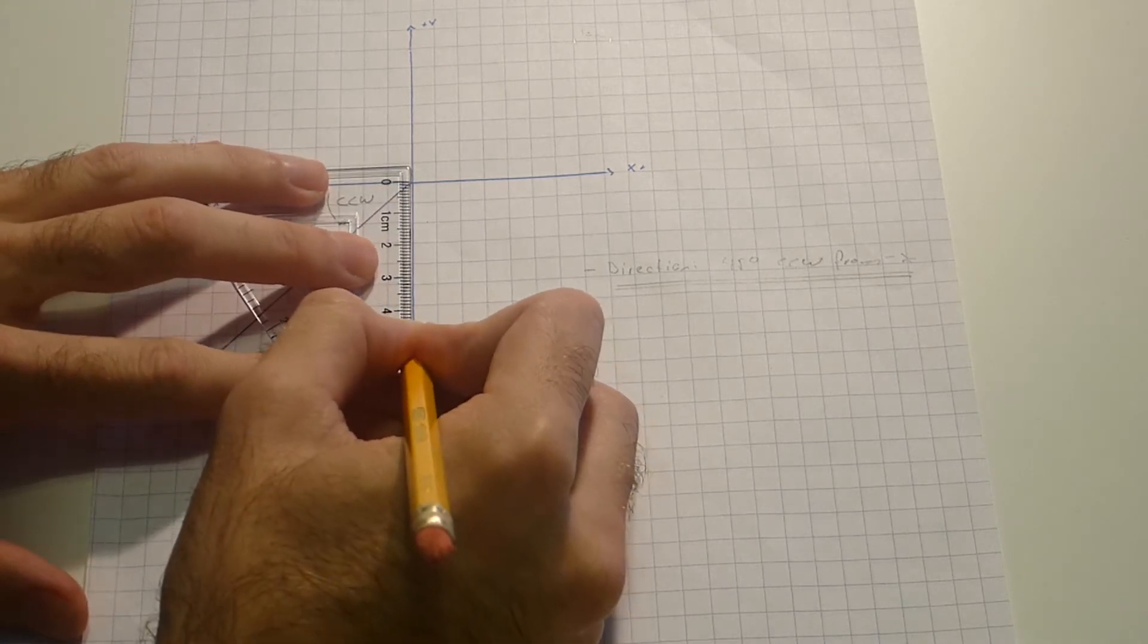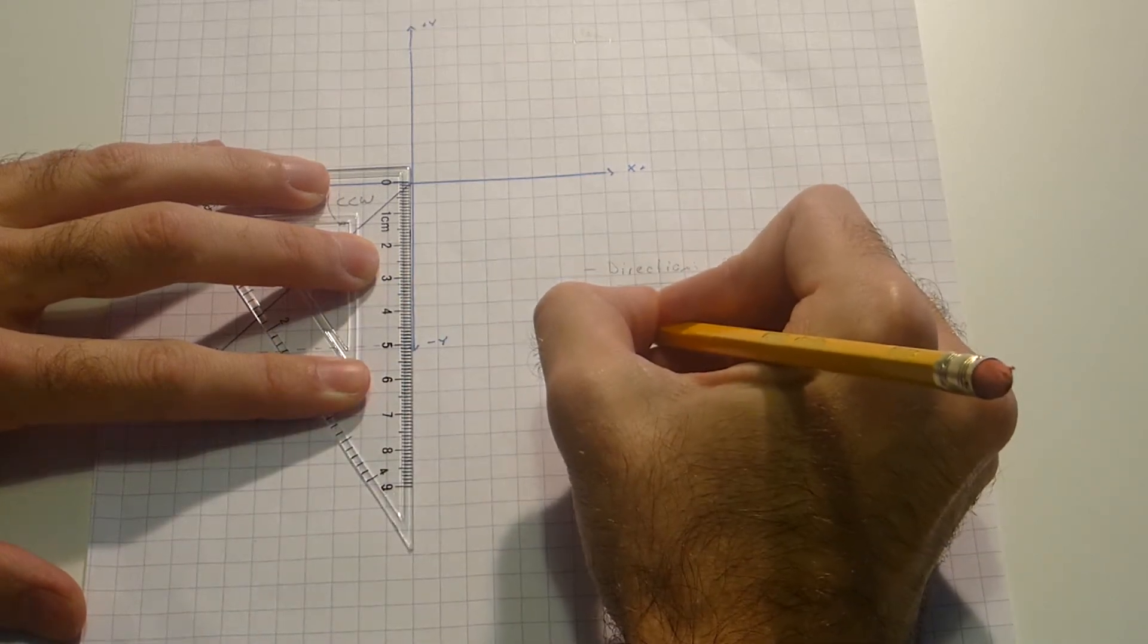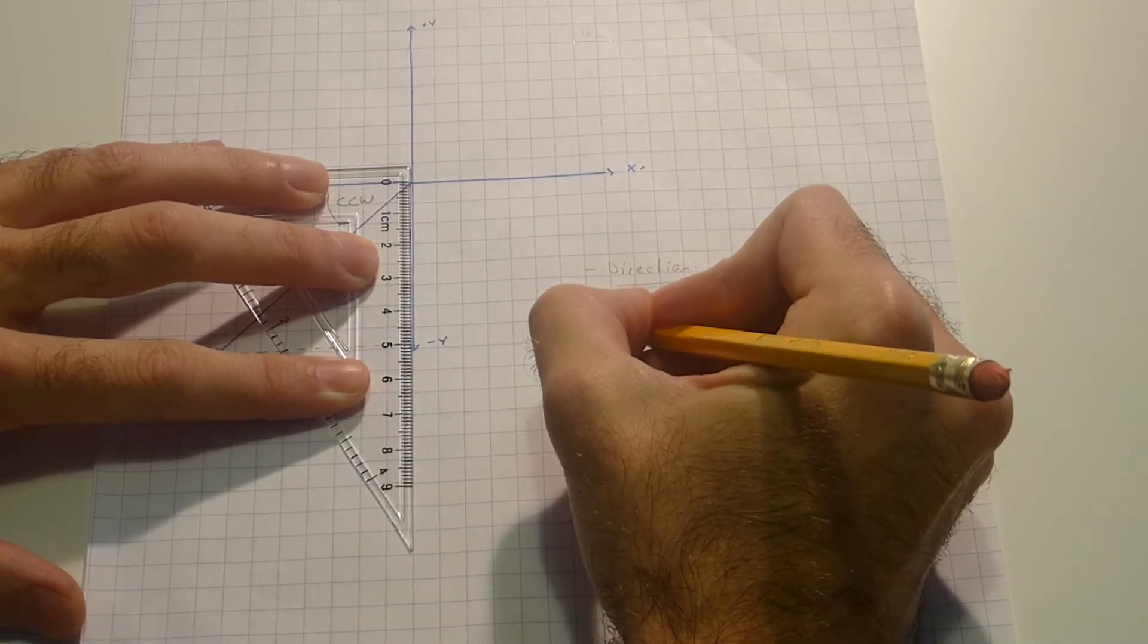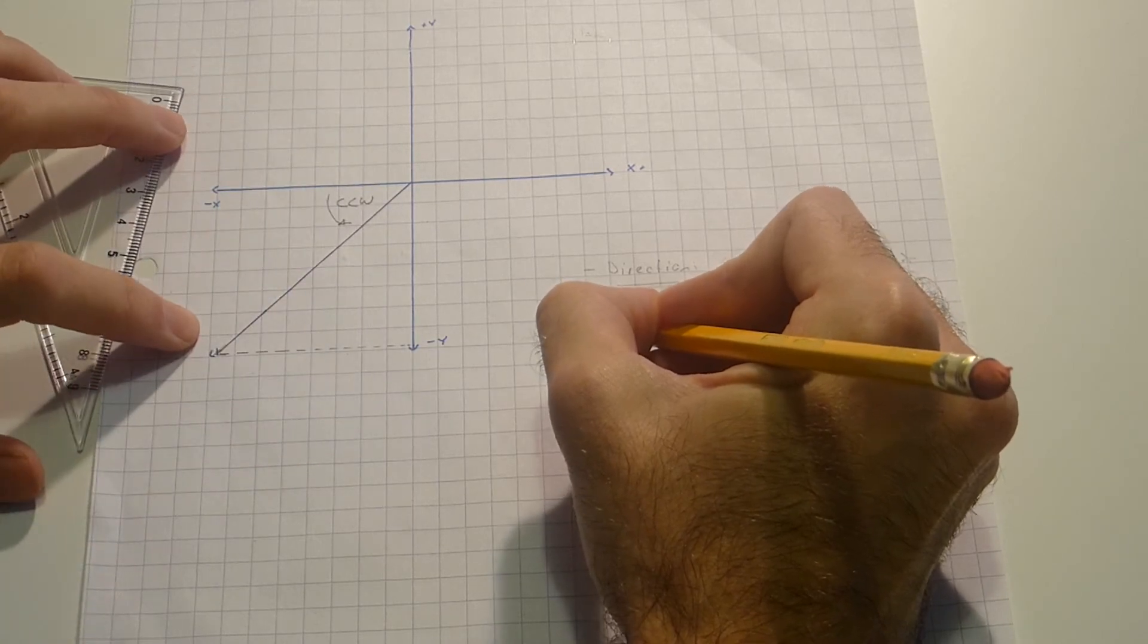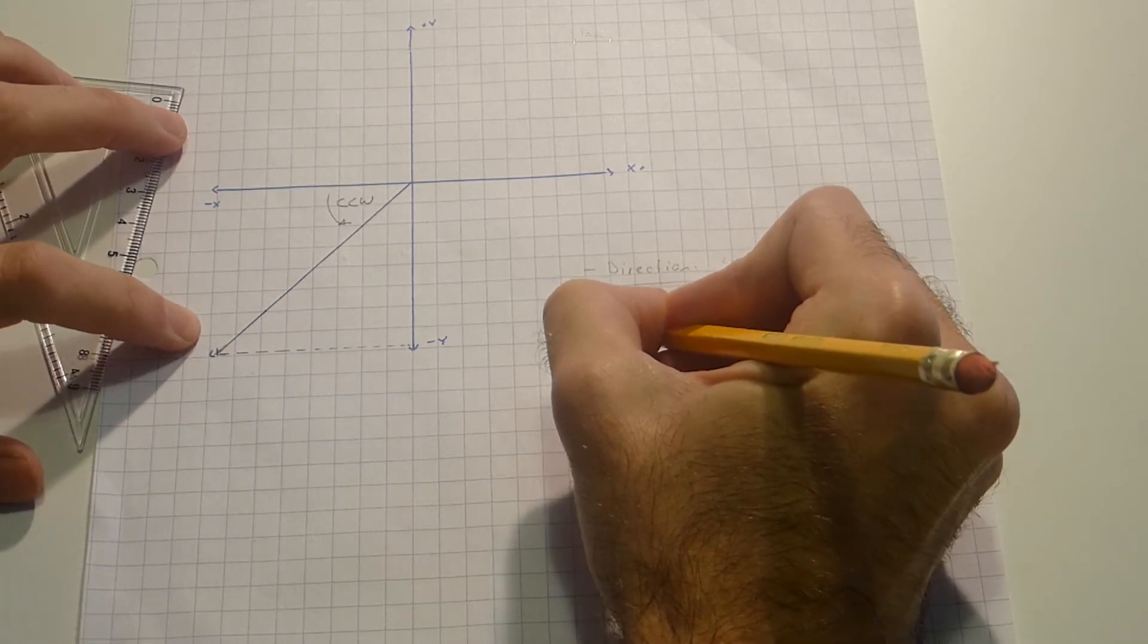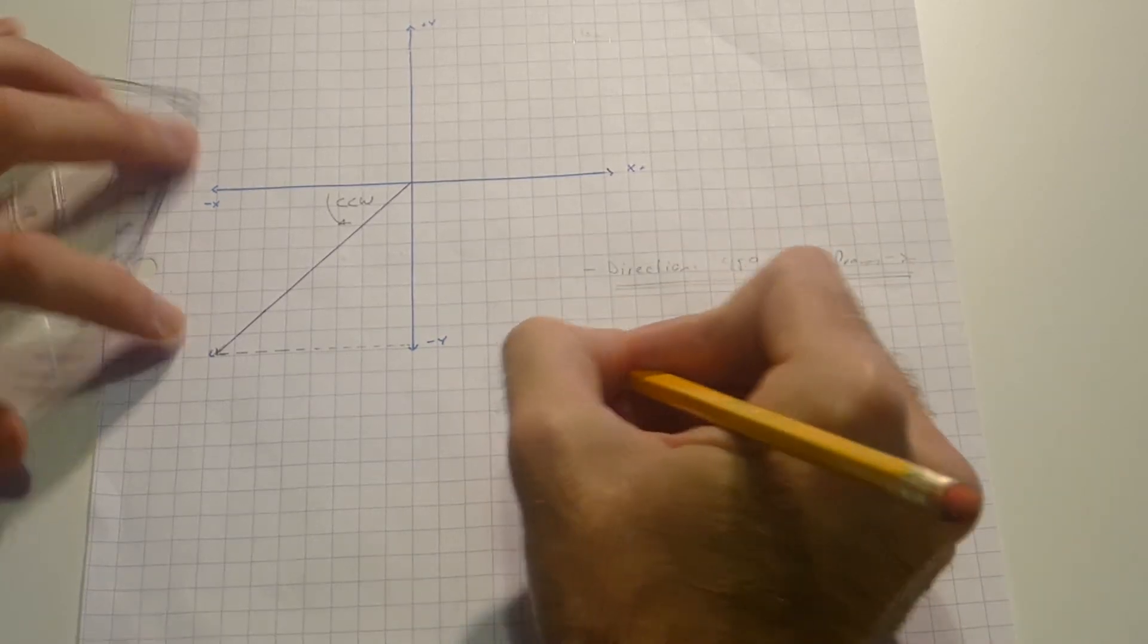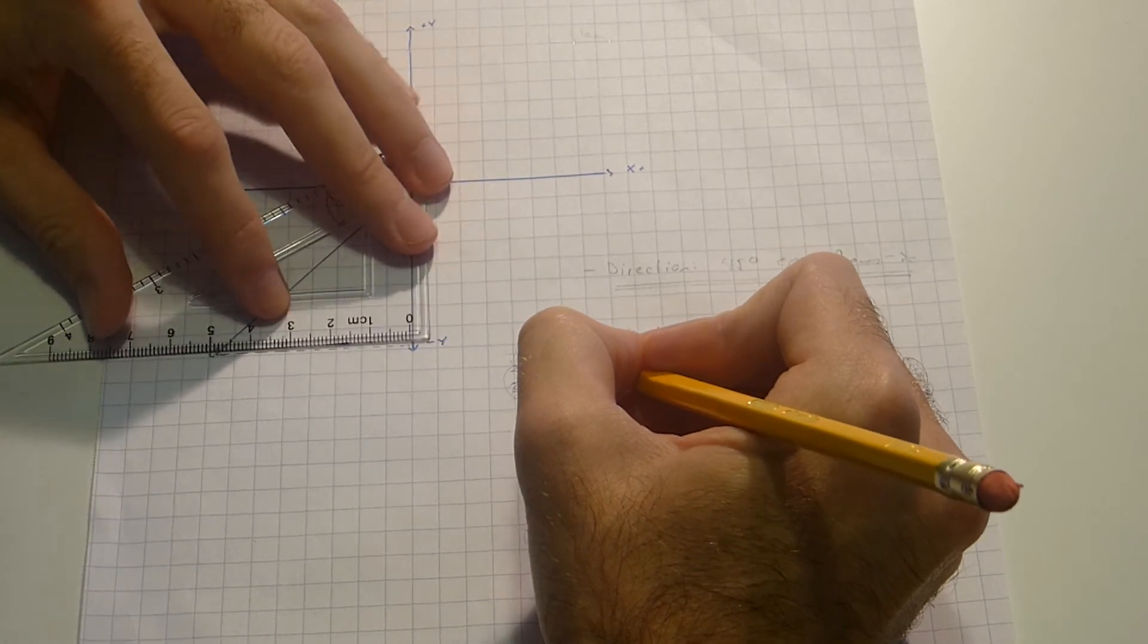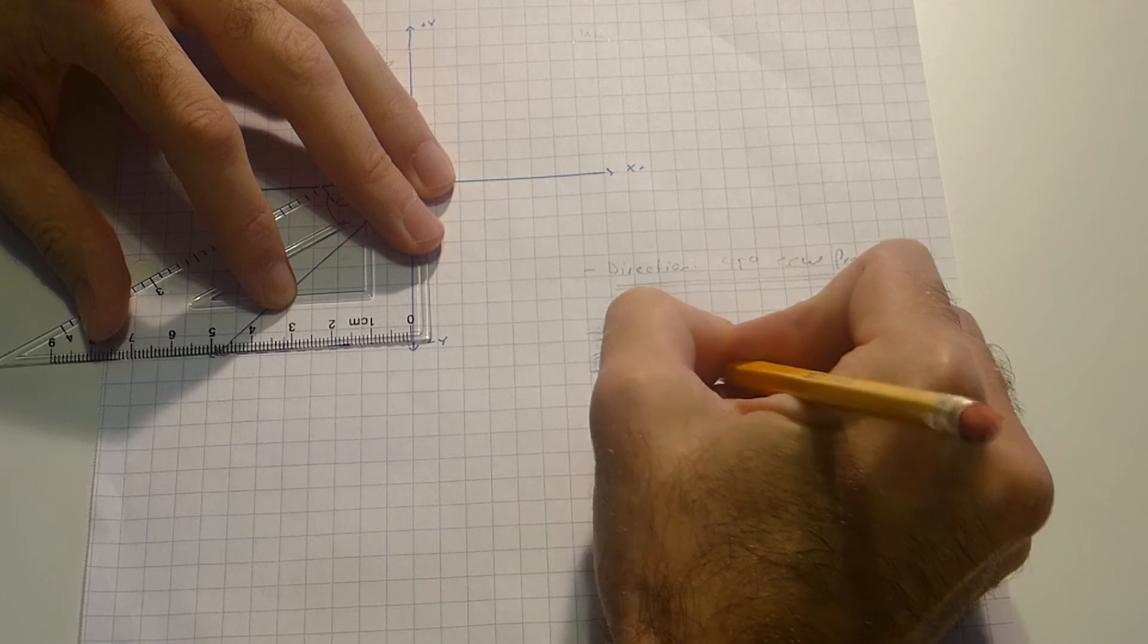My y component seems to be 5 centimeters to the negative. Therefore I have my vector and my x is also minus 5 centimeters.